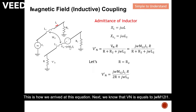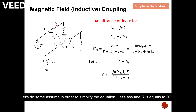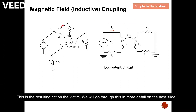We know that Vn equals j-omega-M12-I1, so we substitute that in. Then we assume R equals R2 to simplify the equation, so this becomes 2R in the denominator. This is the noise that couples over from conductor one to conductor two — V-prime-n is the voltage noise that drops across the resistance, which is normally the victim. We will go through this in more detail on the next slides.